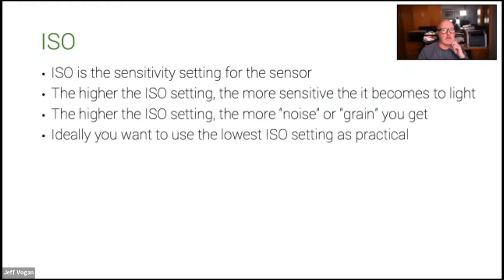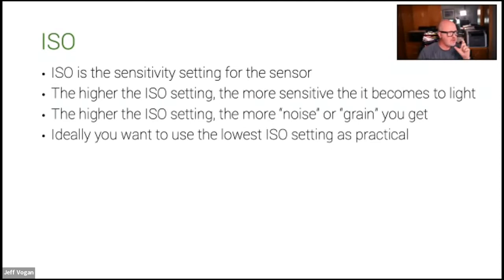Ideally you want to use the lowest ISO setting as practical. Different cameras handle high ISO differently. I sold my Nikon D5 yesterday — it was by far the best camera I had for high ISO performance. I could literally shoot at about 51,000 ISO and still get usable pictures with that camera.